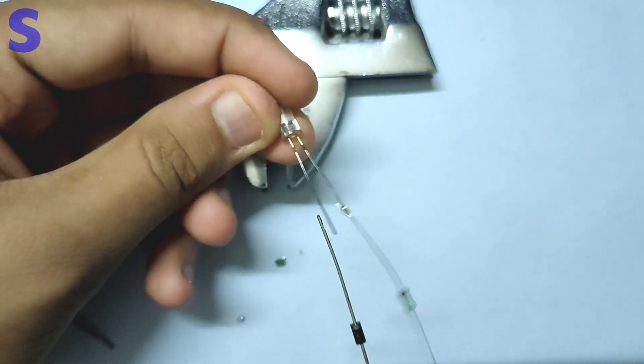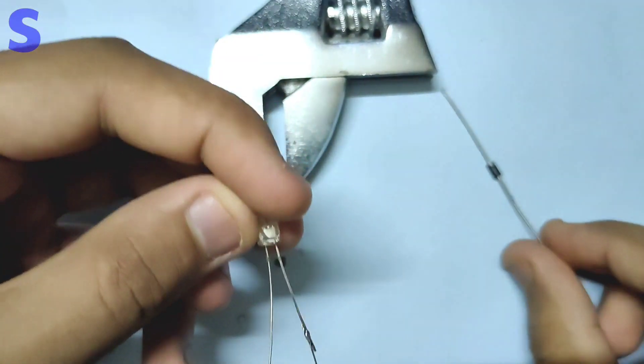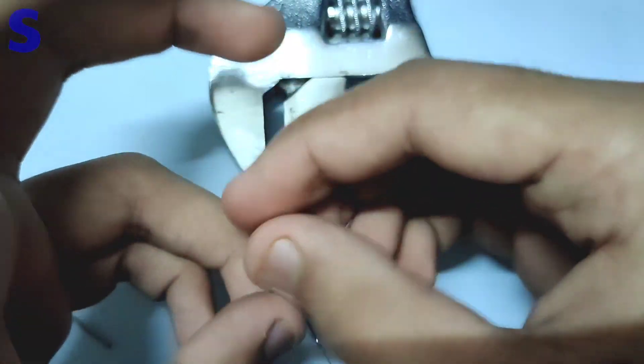Connect the positive terminal of the 1N4007 diode to the positive terminal of the LED.